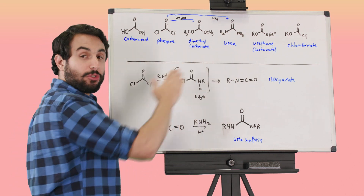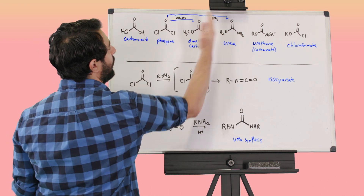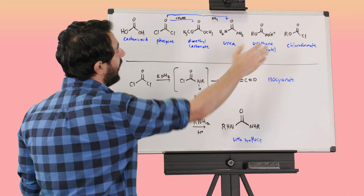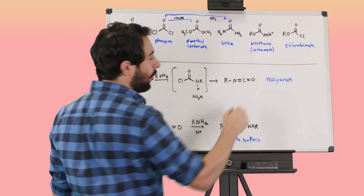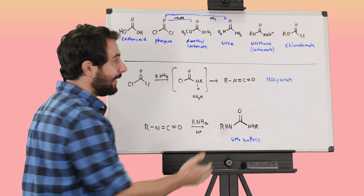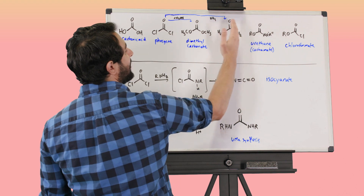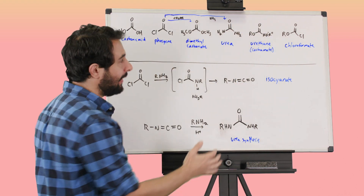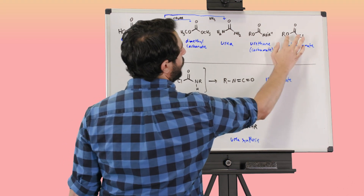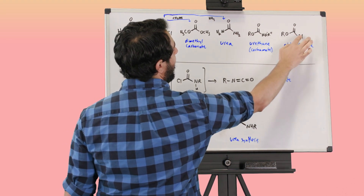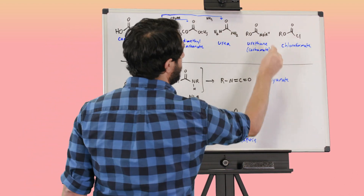So these are all symmetrical derivatives: we've got a double acid chloride, double ester, and double amide. But we can also have asymmetric molecules. This is called a urethane, or it can also be called a carbamate — we've got OR and then we've got an amine, so it's sort of like an ester and an amide combined. And then we've got a chloroformate — we've got OR and we've got Cl, so this is essentially like an ester and an acid chloride combined.